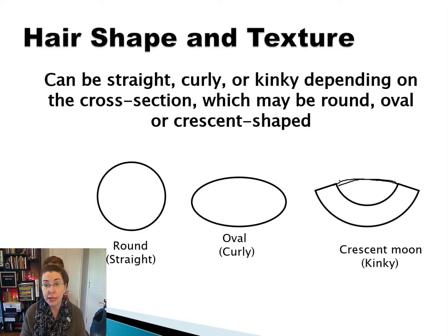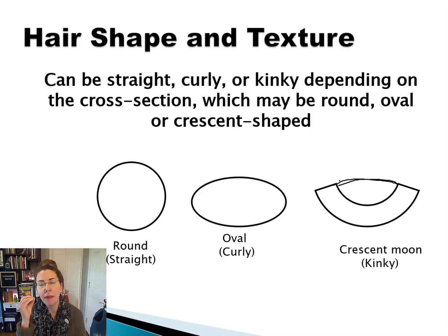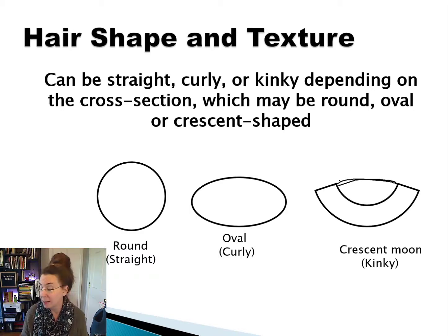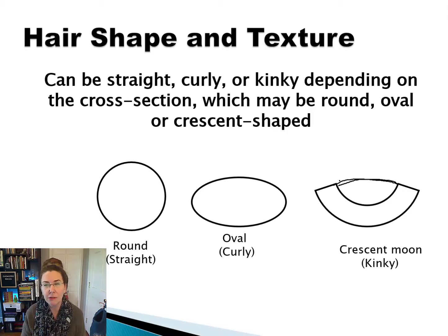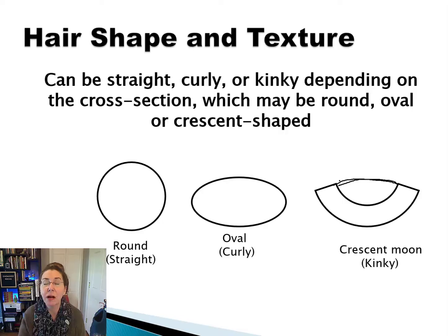By straight hair we mean hair that is pin straight, stick straight — we're talking about the natural texture of the hair before any chemical or heat processing. It's certainly possible to straighten hair chemically or with heat using a flat iron, but that doesn't change the cross-sectional shape of the hair itself.